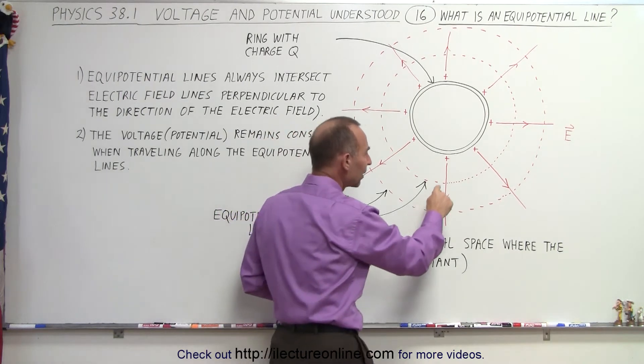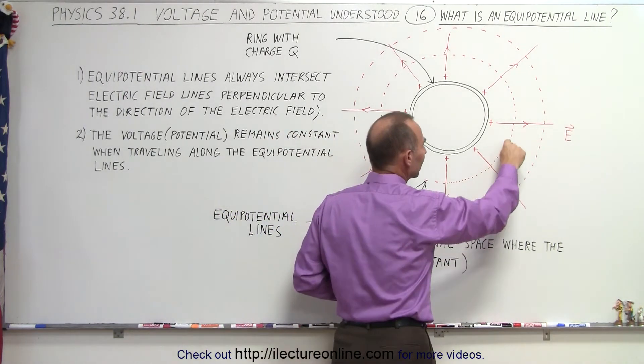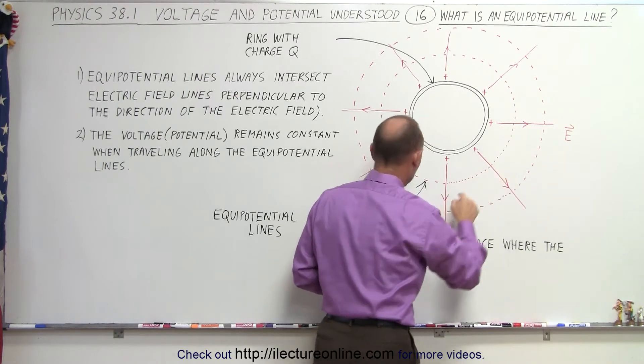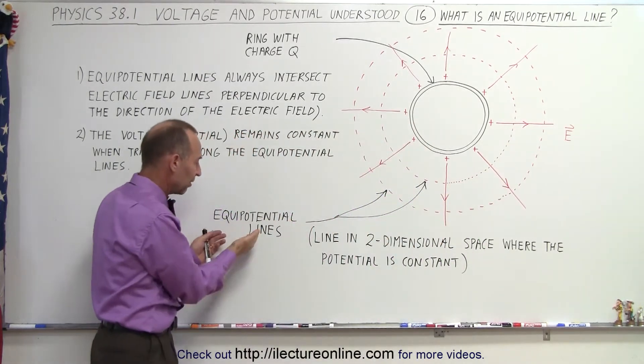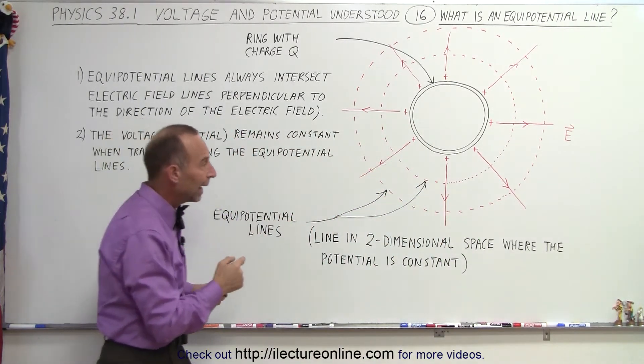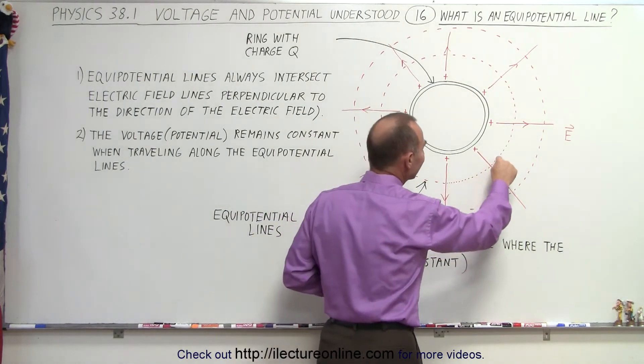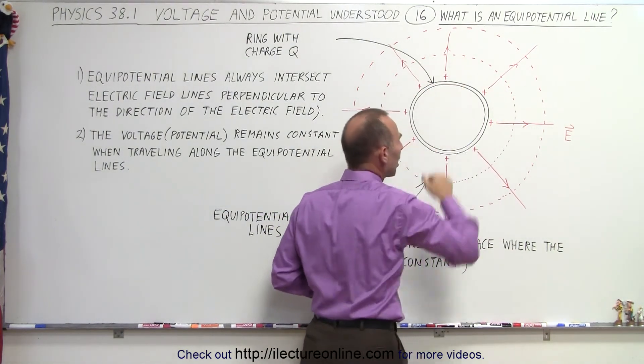Also notice that the lines always cross the electric field lines, or I should say the equipotential lines, which is what they are. Those dashed lines are the equipotential lines. And notice how they're always perpendicular to the electric field lines, no matter where you draw them.